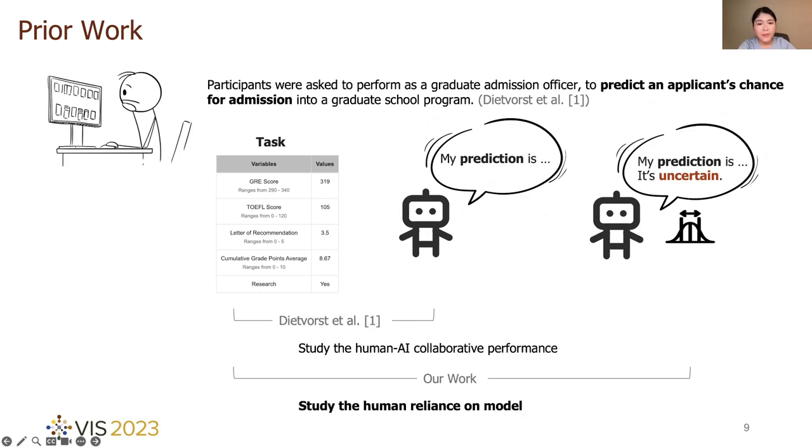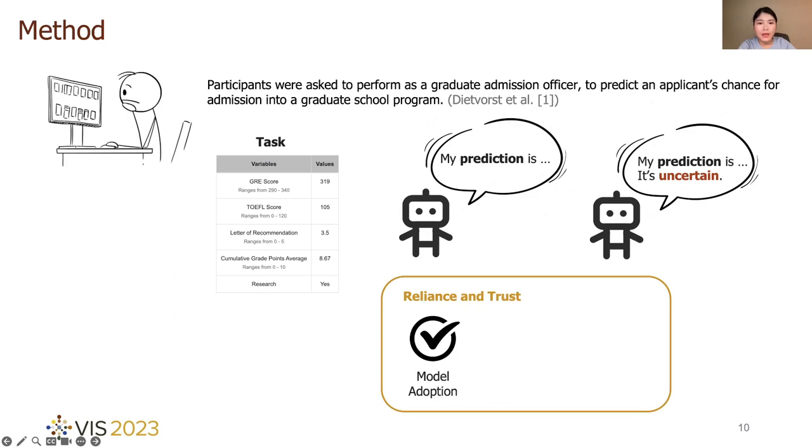Except for evaluating human-AI collaborative performance, we also focus on human reliance on the model from three aspects: human choice on model adoption as a behavior measure for model reliance, free-form response for elaborating reasons for human choice, and self-reported trust scales.